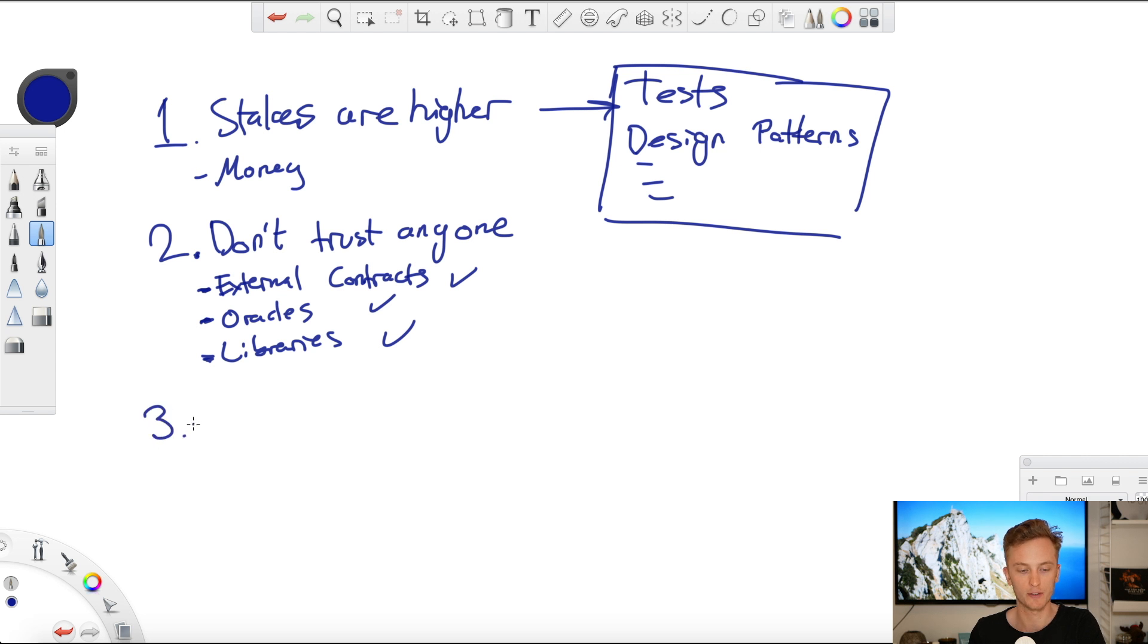The third thing that every smart contract developer should know is that you need to plan for the future. You may think, well, I always have to plan for the future. Well, this is different when it comes to software development. If you compare it to web development, I can at any time update my website, I can at any time update the code running on my server. With smart contracts it's different. On their own, they are immutable, so you can't change it in the future.